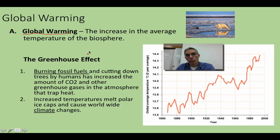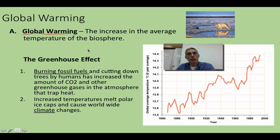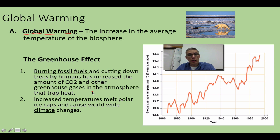Global warming is simply the increase in the average temperature of the biosphere, often caused by the release of gases containing CO2 into our atmosphere, which exaggerates the greenhouse effect. The greenhouse effect is something that's good for us because it helps keep our Earth warm. But when you burn fossil fuels or cut down trees, this increases the amount of CO2 and other greenhouse gases in the environment, trapping heat, which causes certain organisms to be unable to adapt — since adaptation takes a long period of time.